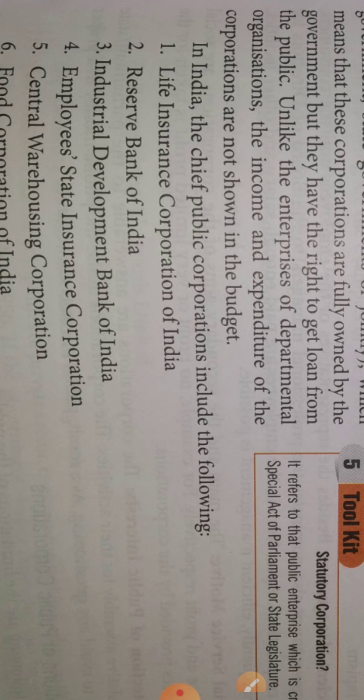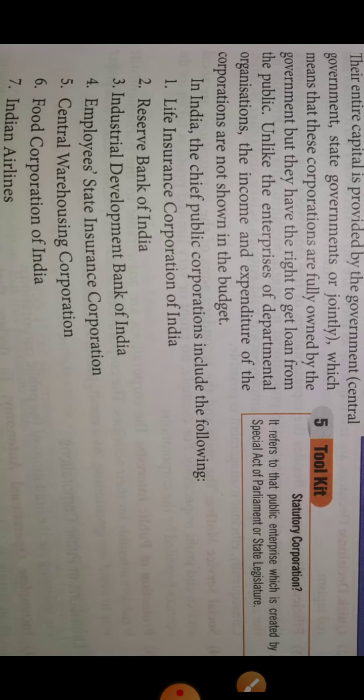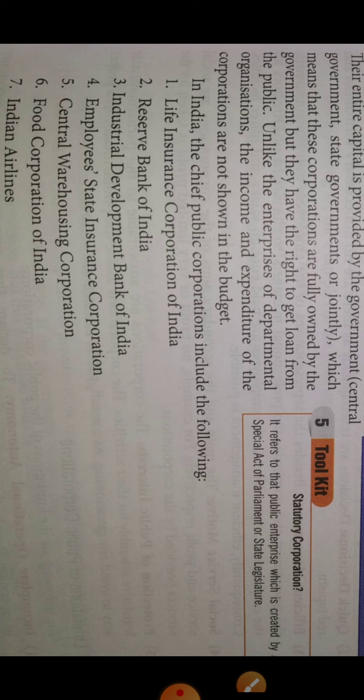In India, the chief public corporations include: LIC — Life Insurance Corporation, RBI — Reserve Bank of India, Industrial Development Bank, Employees Insurance Corporation, Central Warehousing Corporation, Food Corporation of India, and Indian Airlines. These are all run under the public corporation structure.